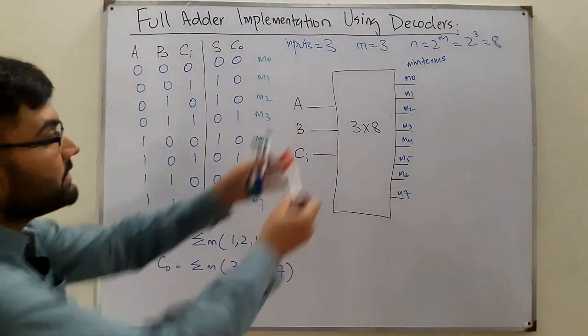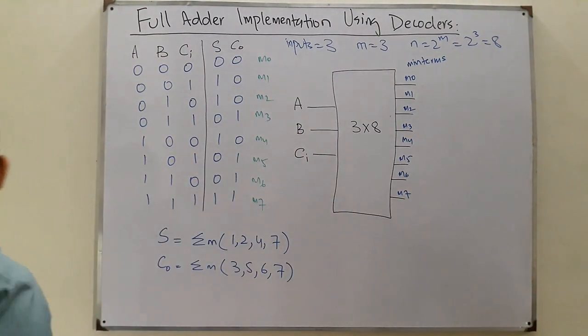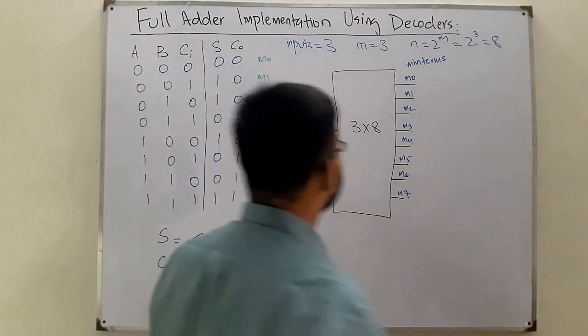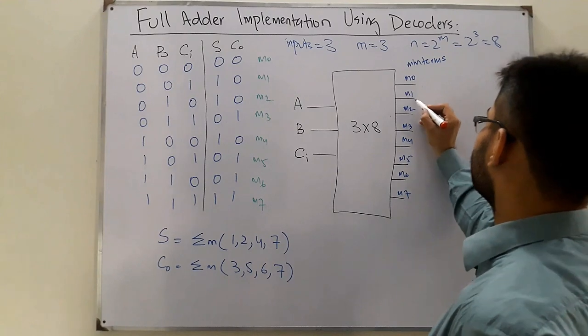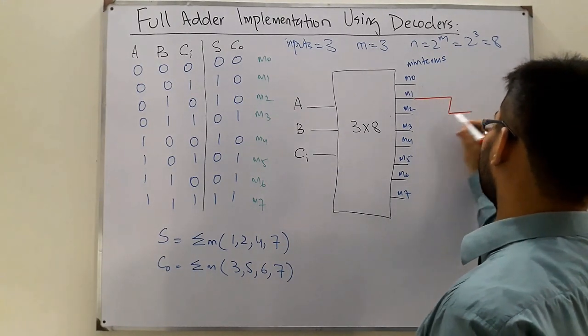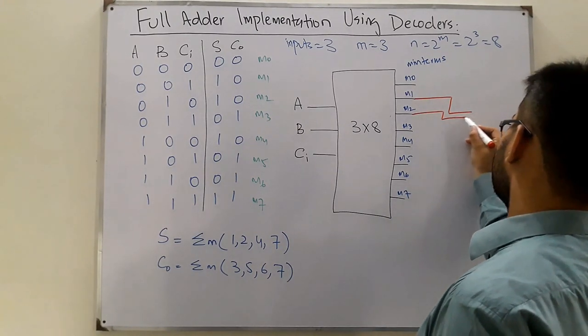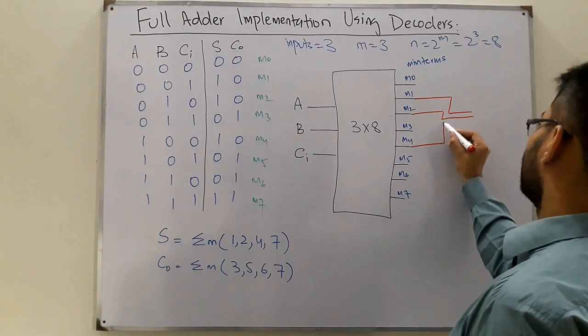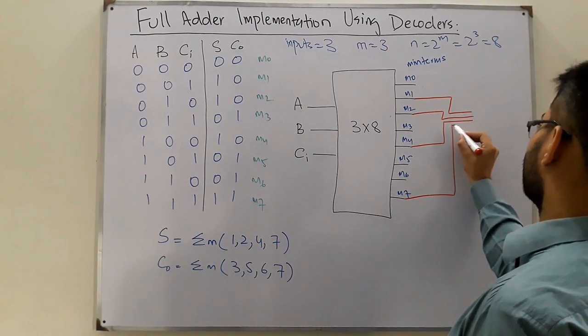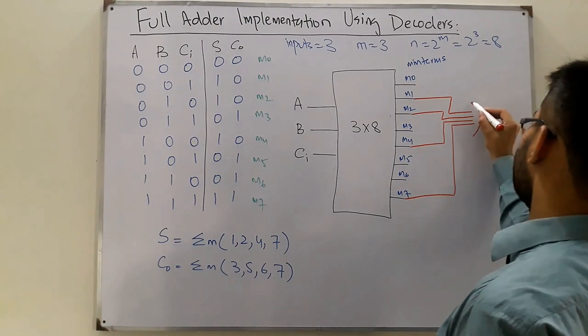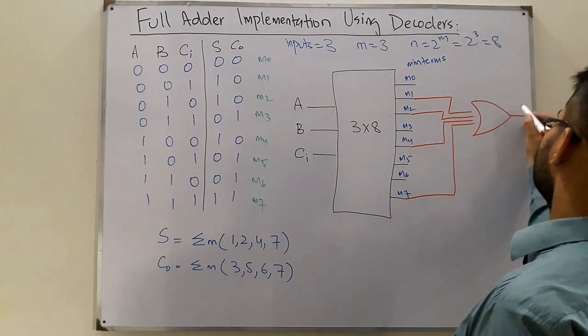So now what do you do? Now you take those minterms and you OR them together. For the sum, you have 1, 2, 4, and 7. So this is the 1, this is 2, this is the 4, and this is the 7. You take them and you OR them—this gives you the sum.